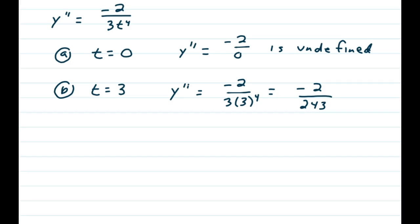And part a is to put t is equal to 0 in there, so we get negative 2 over 0, which is undefined.